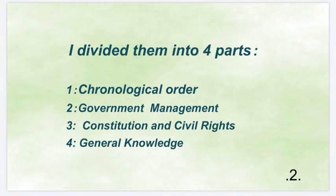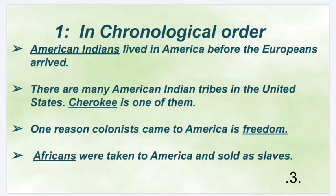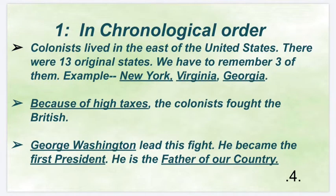By chronological order, government management, constitution and civil rights, and general knowledge. First, we have it in chronological order. American Indians lived in America before the Europeans arrived. There are many American Indian tribes in the United States — Cherokee is one of them. One reason colonists came to America is freedom. Africans were taken to America and sold as slaves. Colonists lived in the east of the United States. There were 13 original states. We have to remember three of them — for example, New York, Virginia, Georgia.